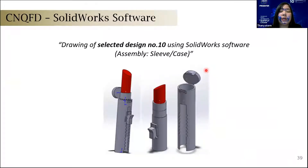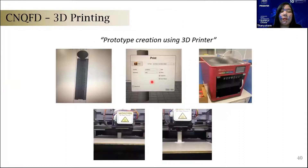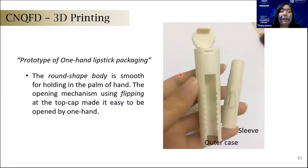The selected design number 10 was drawn using SolidWorks software, showing the sleeve and case of the one-hand lipstick packaging. After that, the prototype was created using 3D printing technology. The final prototype shows the outer case and sleeve — the large smooth body is easy to hold, and the opening mechanism uses a flip at the top cap, making it easy to open with one hand.